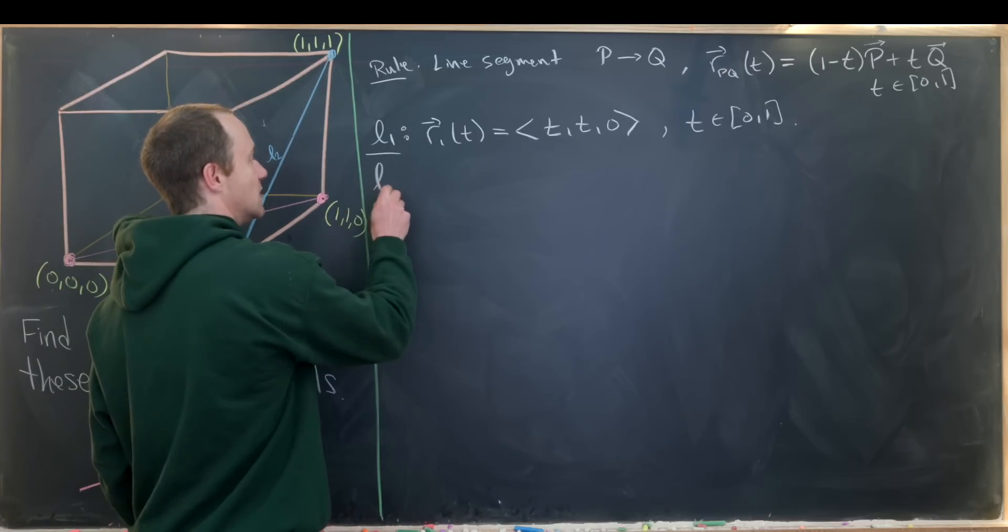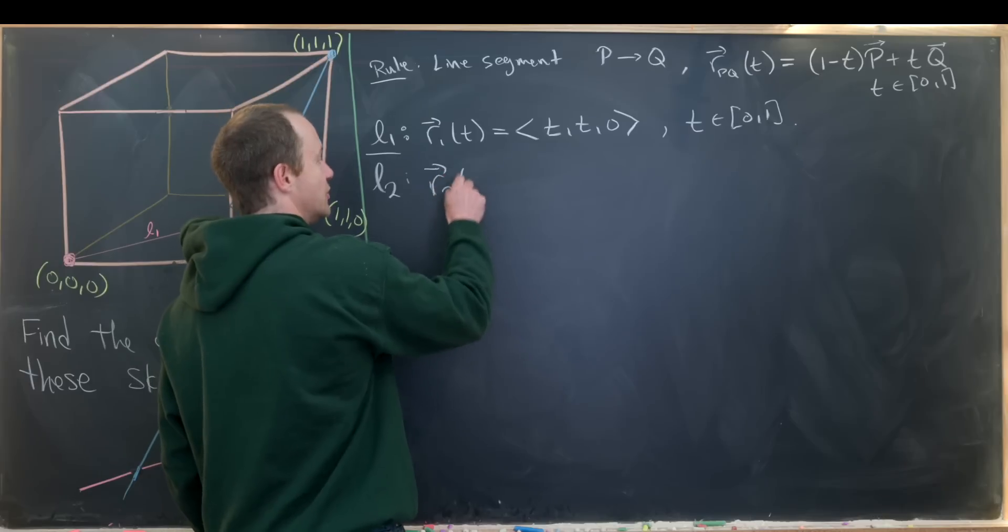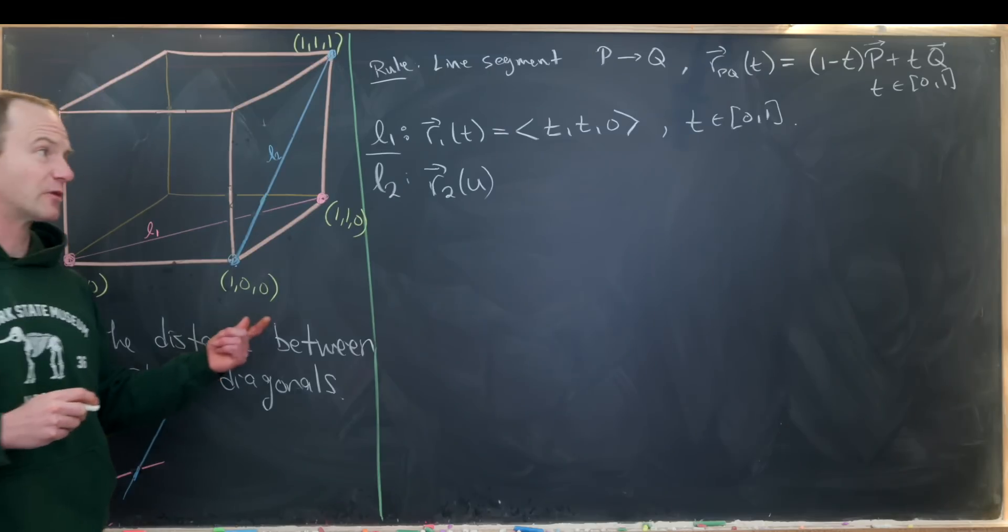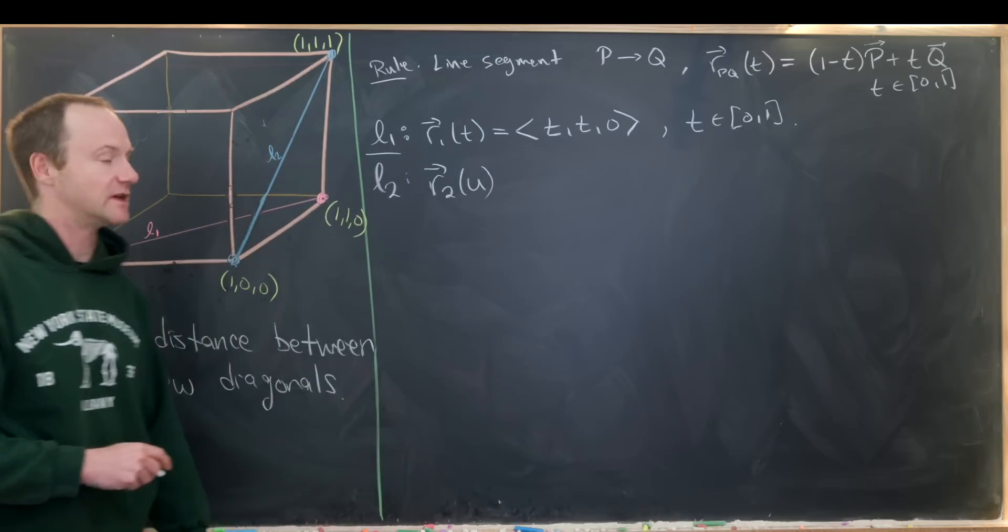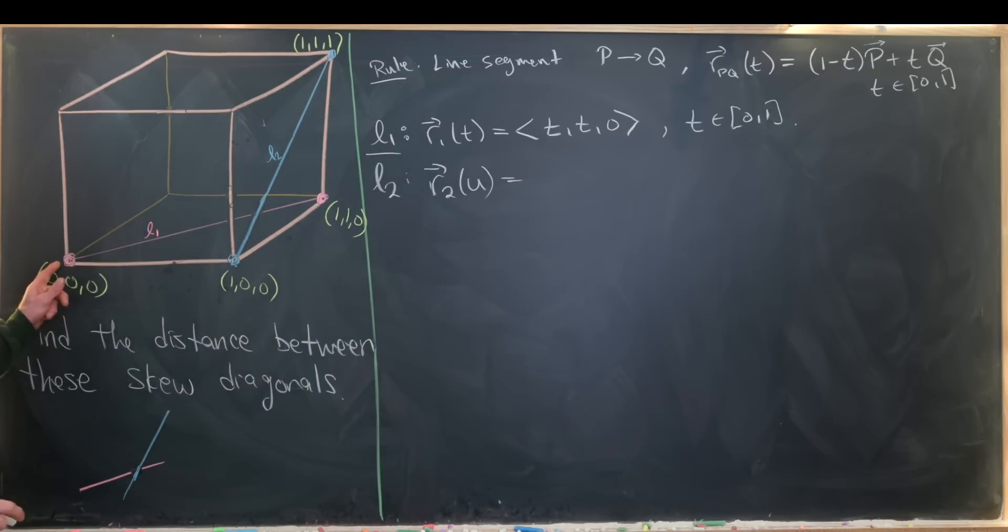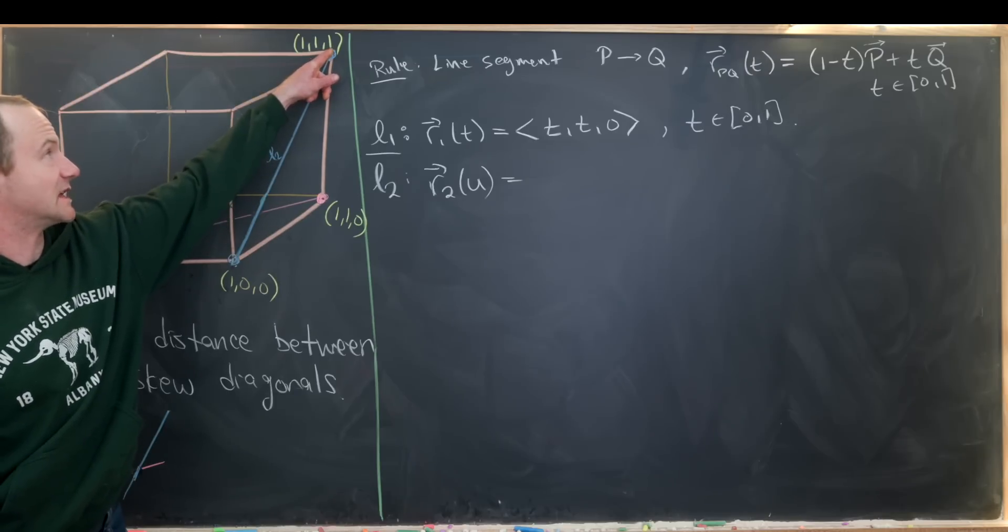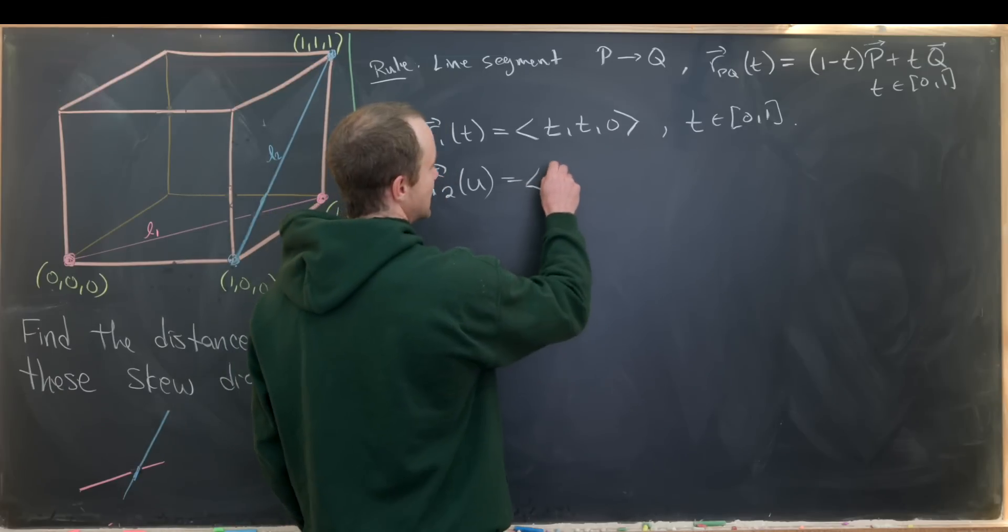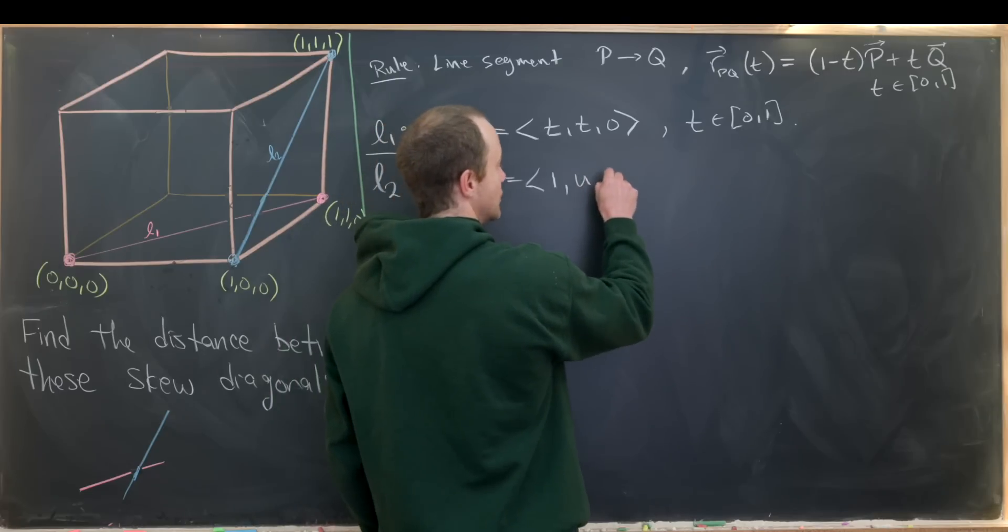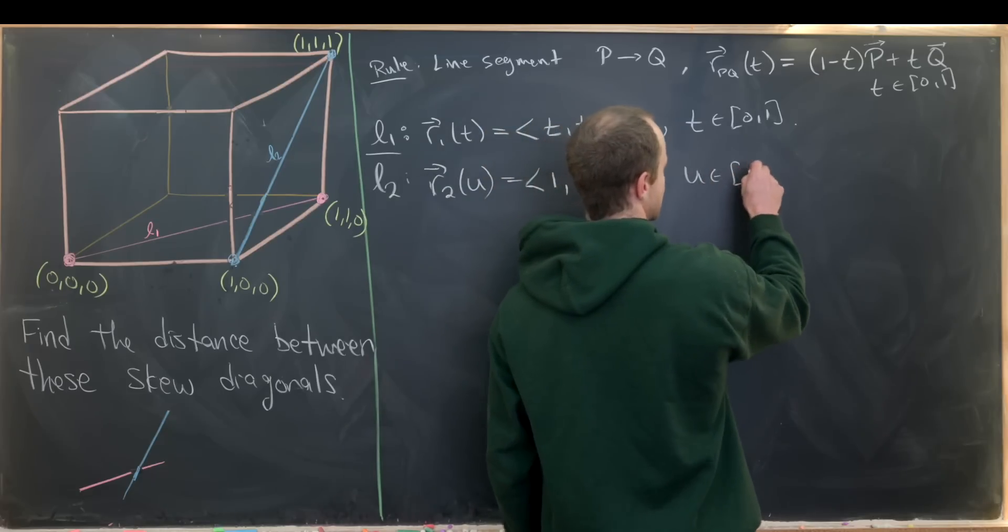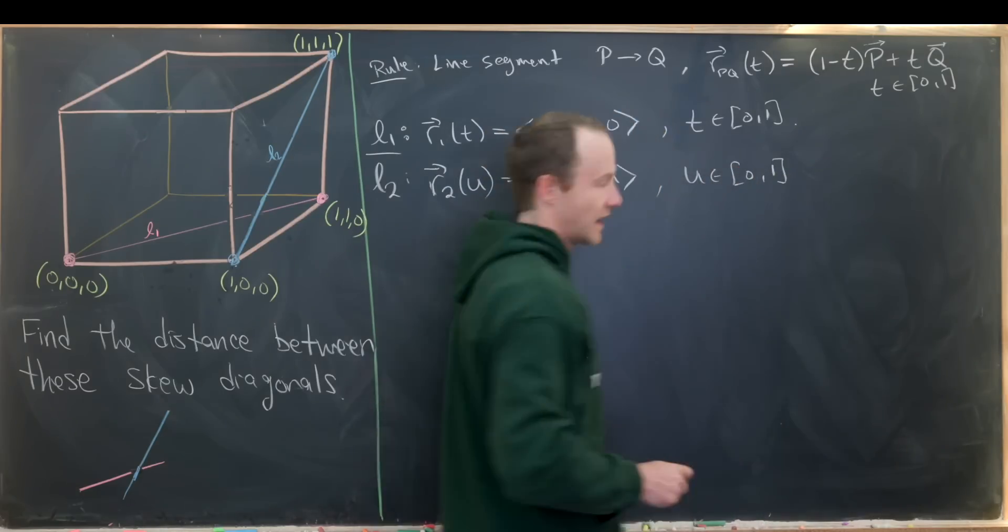Now let's parametrize L2. So that'll be R2. And I'm going to use the parameter U instead of T here, just so that I really point out that these are parametrized separately. And so now we'll do, in this case, 1 minus U times the starting point, so it'll be 1 minus U times this, plus U times the ending point. So that'll be U times that. So after all is said and done, that gives us the equation, or the vector, 1, U, U. And so here, notice this first entry is constant. So that's pretty interesting. So here we have U goes between 0 and 1.